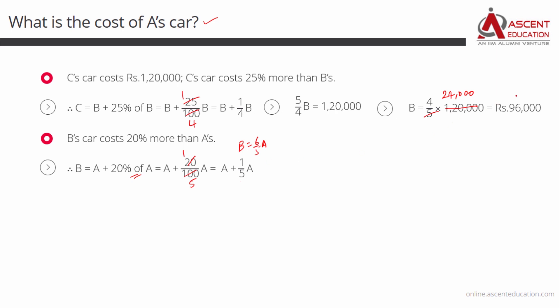We know the value of B is equal to 96,000. So I am going to write 6 by 5 A is equal to 96,000. To find the value of A, cross multiply this 6 by 5. So we will get A is equal to 5 sixth of 96,000. 6 and 96,000 will cancel to leave us with 16,000. 5 into 16,000, 80,000 is the cost of A's car. Choice 1 is the correct answer.